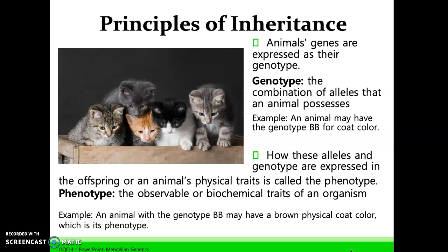An animal's genes are expressed as their genotype. The genotype is the combination of alleles that an animal possesses. For example, an animal may have a genotype uppercase B uppercase B for coat color. How these alleles and genotype are expressed in the offspring — an animal's physical traits — is called the phenotype. The phenotype is the observable or biochemical traits of an organism. An animal with the genotype uppercase B may have a brown physical coat color, which is its phenotype.